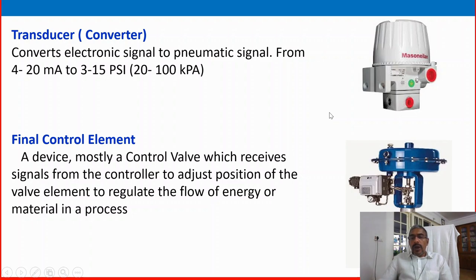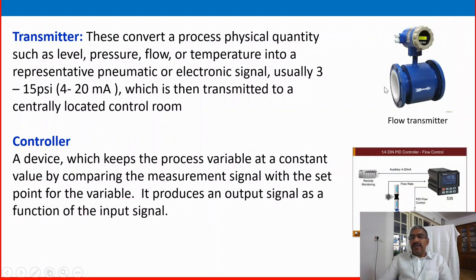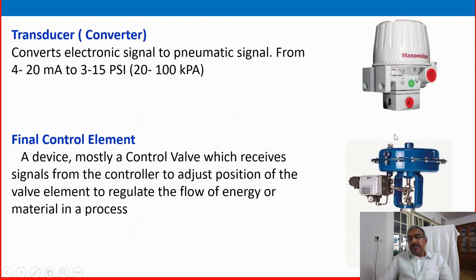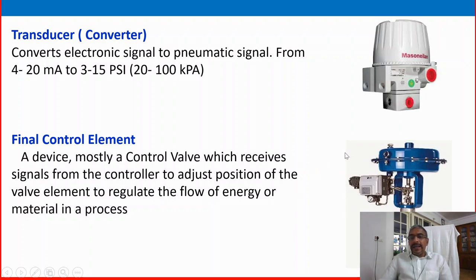When you next go to the plant, just go and see the transmitter — various types of transmitters — and understand them. See the transducer or control valve — various types of control valves — and the instrumentation signal coming from the controller to the transducer and from the transducer to the final control valve. Trace that line and see what other equipment is involved in this control loop to get more familiarization.